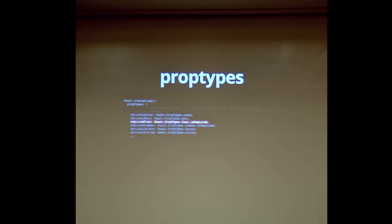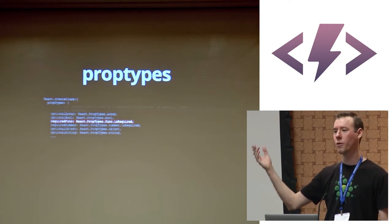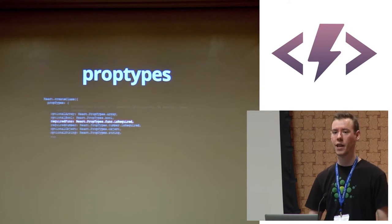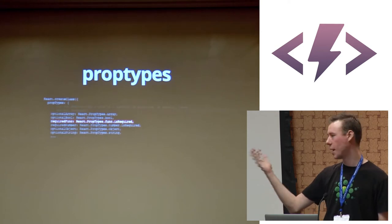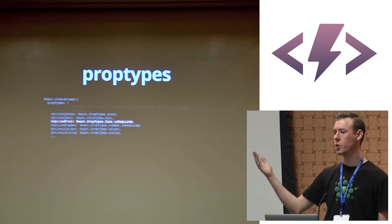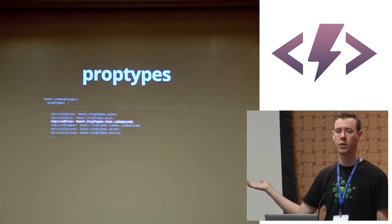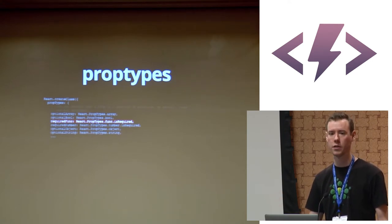I liken it to code contracts in .NET, or the contract idea from Eiffel — a runtime checking mechanism. In lieu of an actual type system or static checking, it's a simple way to make sure people are using your components correctly, that the right things are going in. In development mode it throws console warnings; it's disabled in production so there's no performance hit.